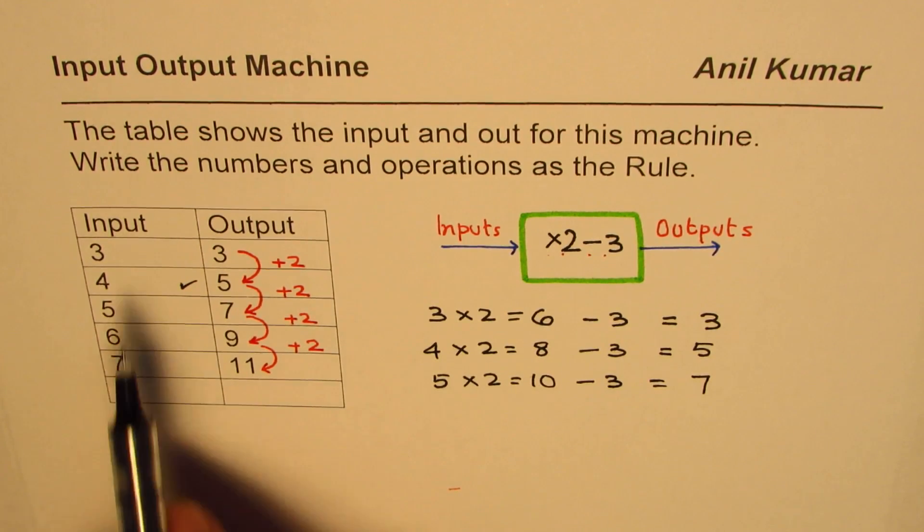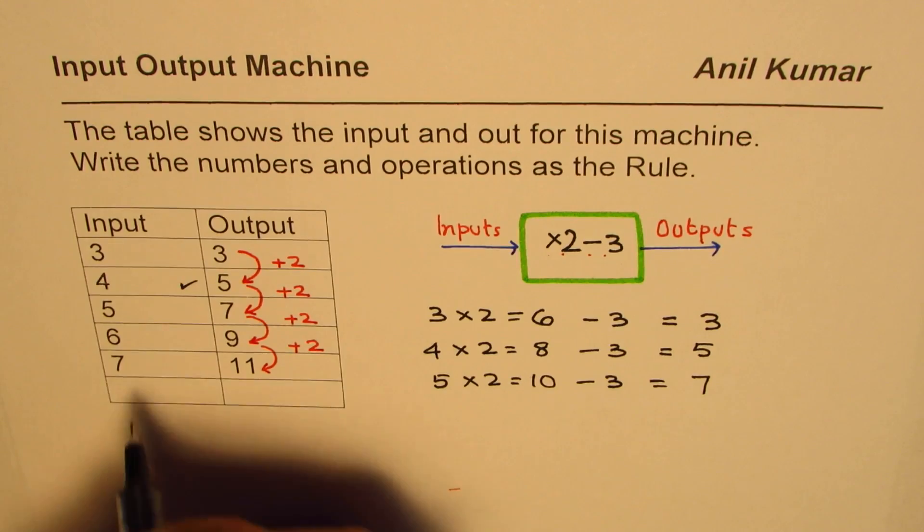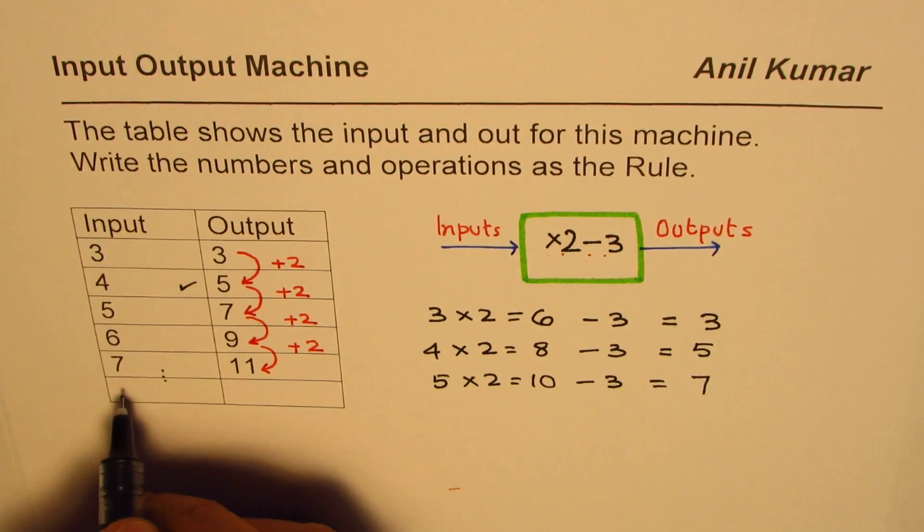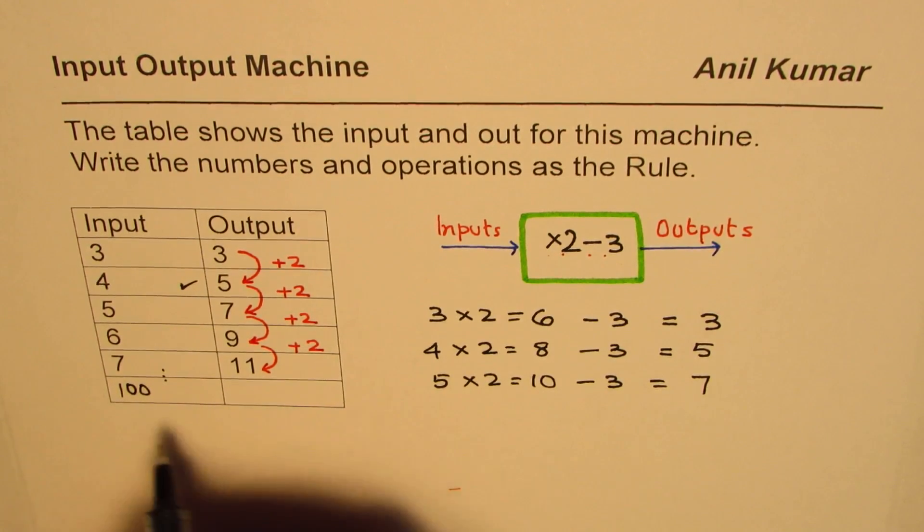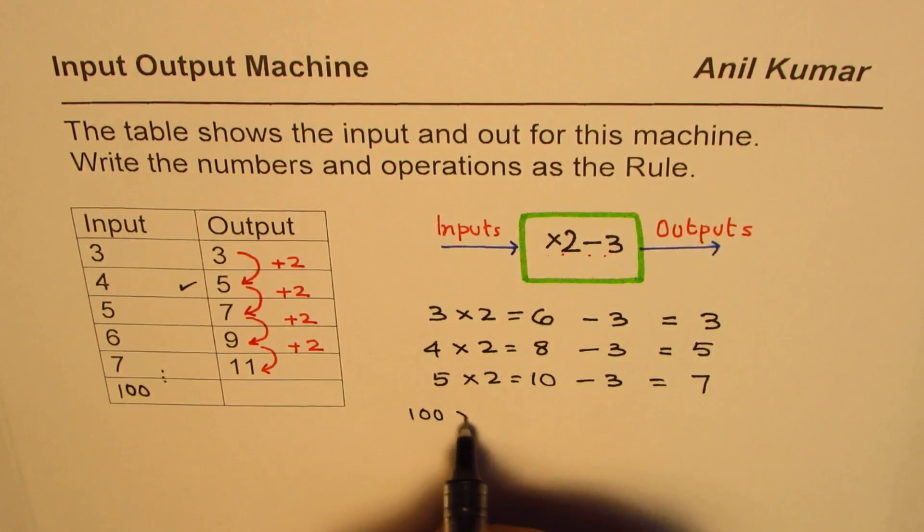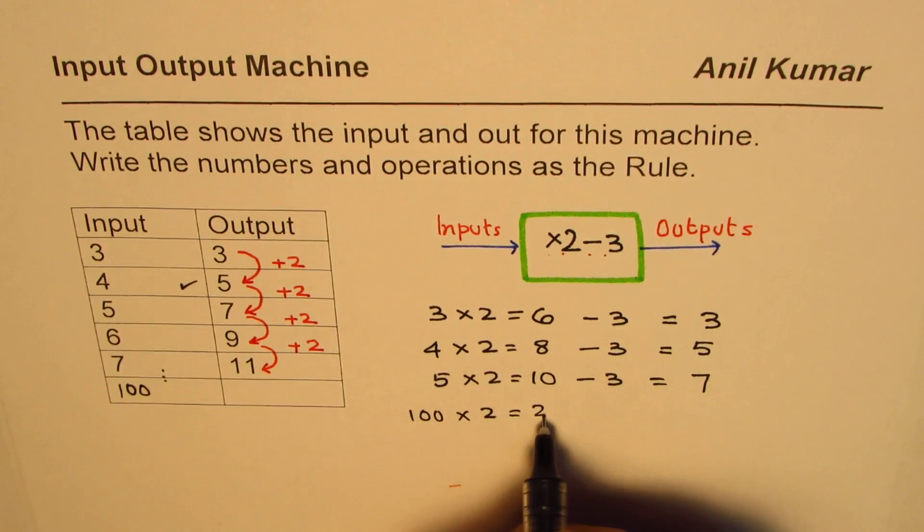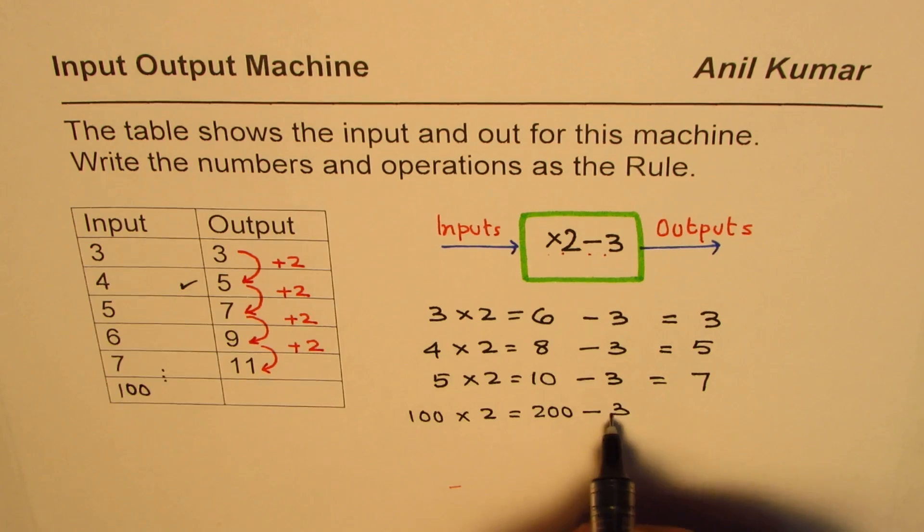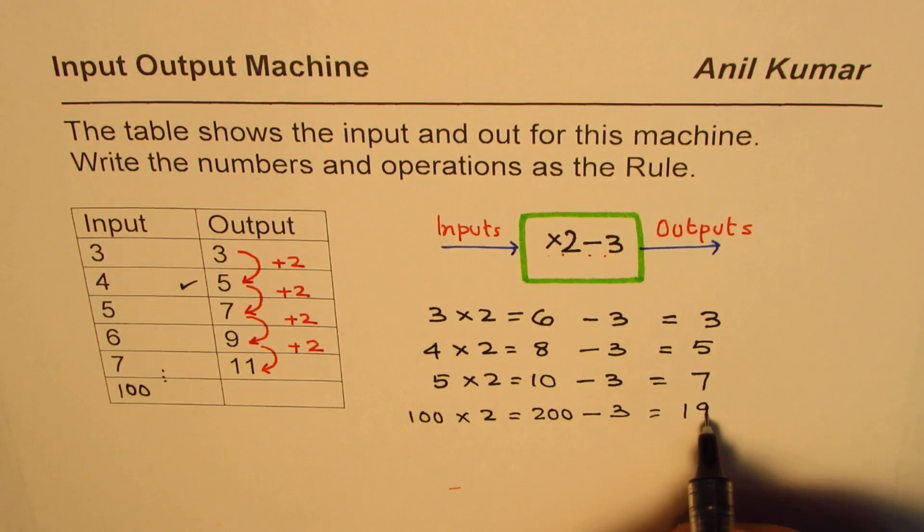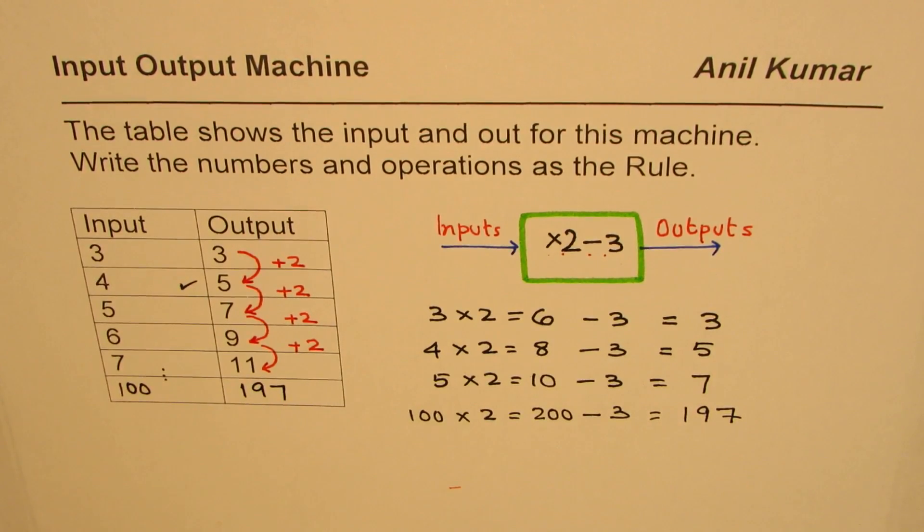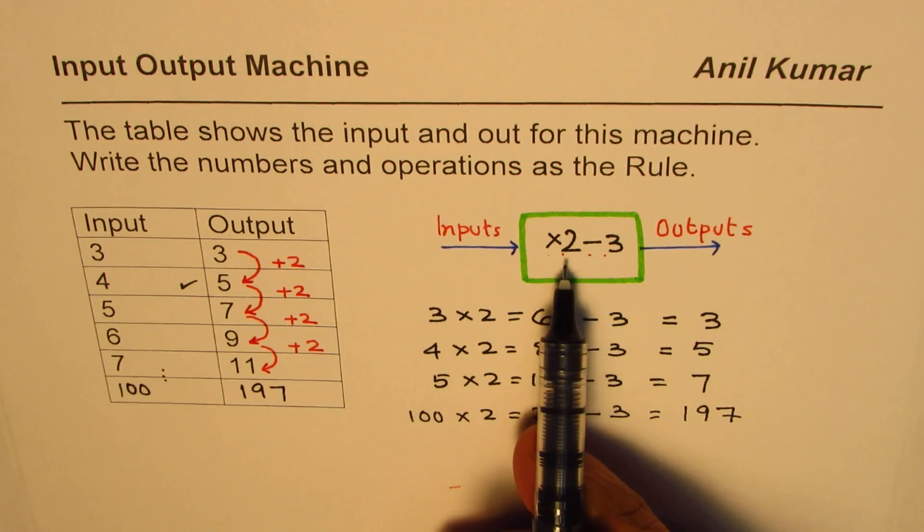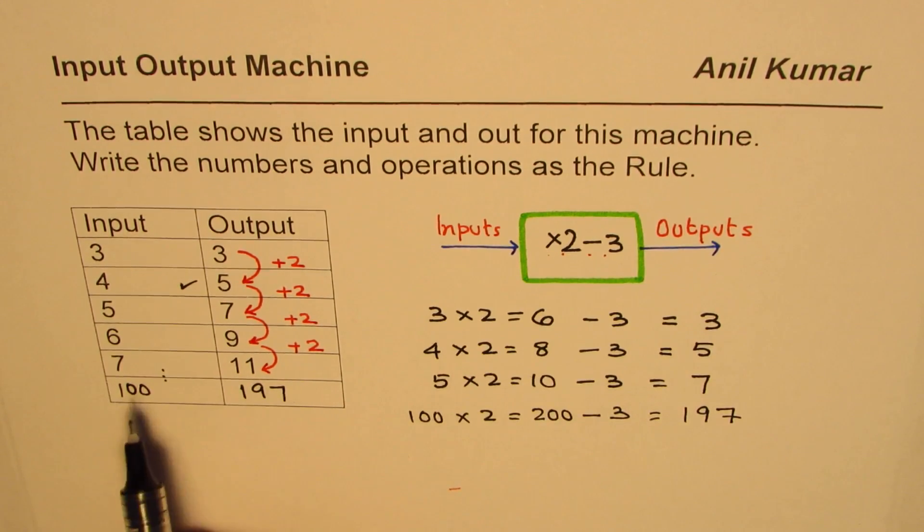Let's have many other numbers. If I write 100 here then what shall be the output? Well, for 100 it should be 100 times 2 which is 200, take away 3 - that means 3 less than 200 - 197. Do you see that? So that number should be 197. So with this rule we can find output for any input - so that is a big advantage.